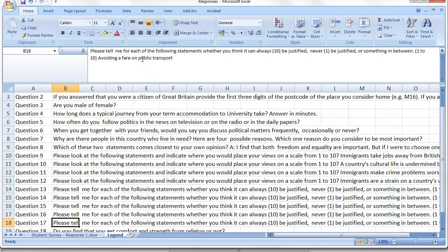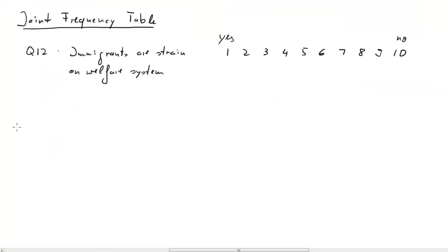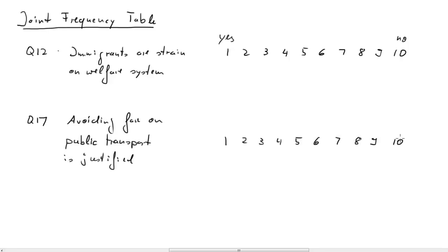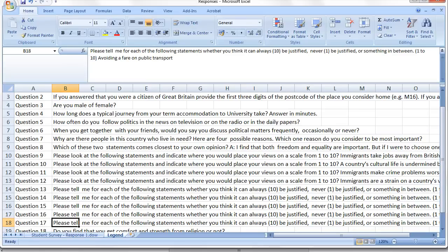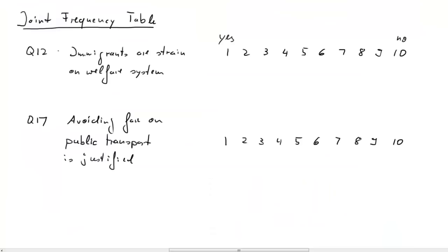The second question is Question 17. That is the question asking whether it is justified to dodge a fare on public transport. Answers are from 1 to 10, and in this case 1 implies never justified and 10 always justified. You always have to be quite clear on what the answers mean — never is 1 and 10 is always, and then of course answers in between.